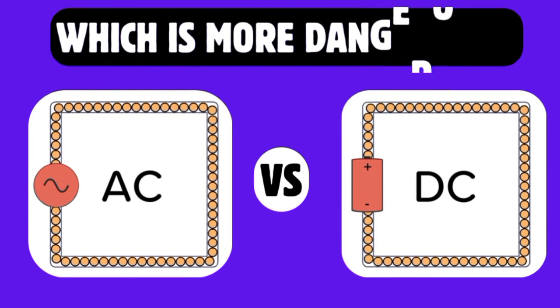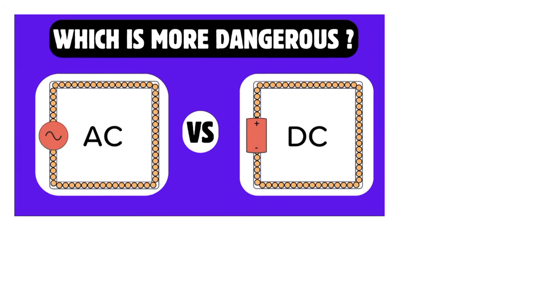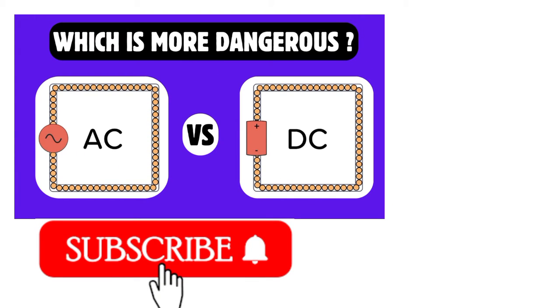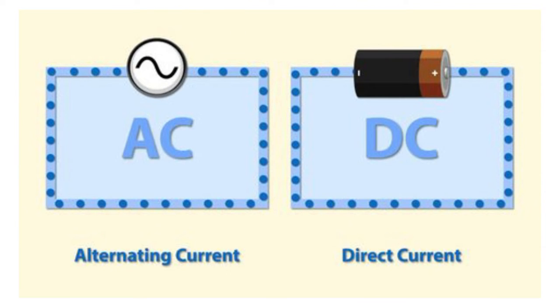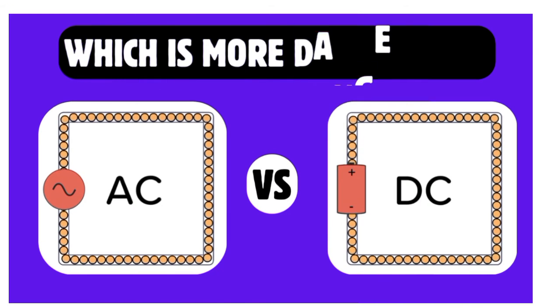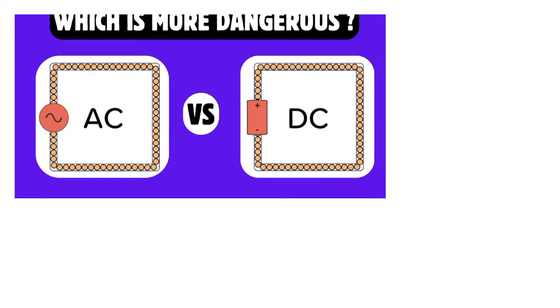Hello friends, welcome back to another informative video. Today we're going to discuss an important question which has been asked in interviews: between alternating current and direct current, which is more dangerous? That means, between AC and DC, which is more dangerous?